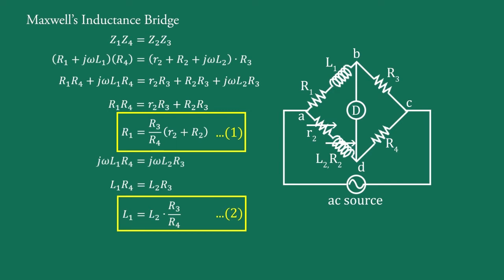These balance conditions cannot be satisfied independently of one another, but they are semi-independent. The bridge is balanced by varying L2 and one of the resistances R3 or R4. Alternatively, R3 and R4 can be kept constant and resistance r2 can be varied. Thus, the value of inductance L1 can be determined when the bridge is balanced — indicated by minimum sound in the headphones or maximum separation between the slits of the null detector.